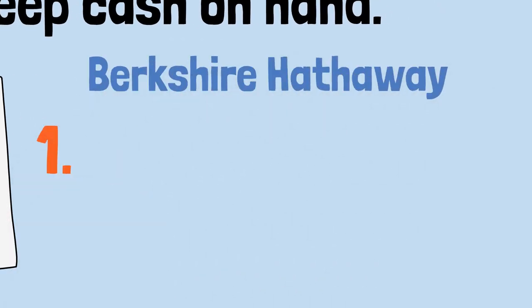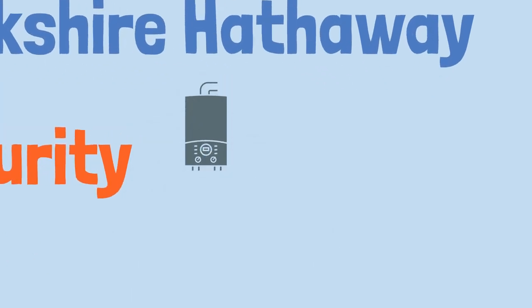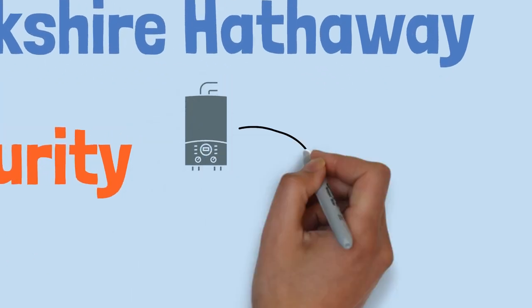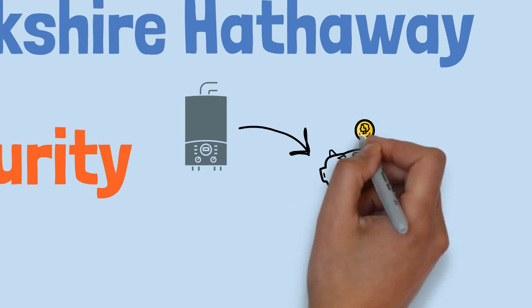There are two lessons that investors like Mark can take from this tip. Having cash on hand enables individuals to have security with their finances. If the boiler breaks down in your house, for example, then having an emergency fund can keep you financially secure and emotionally calm.